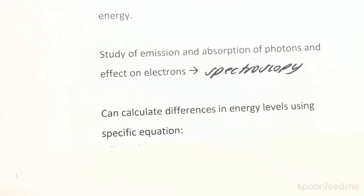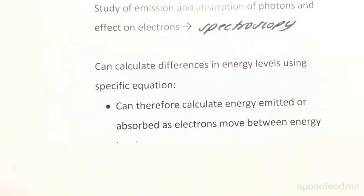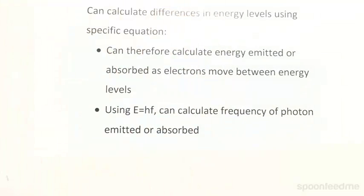We can actually calculate the energy levels for one electron atoms by using a particular formula. By calculating the values of specific energy levels, we can look at the differences in the energies between two levels, and therefore we can calculate the amount of energy that's released or absorbed when electrons move between these energy levels. We can actually then use the equation we looked at previously where energy is equal to Planck's constant times frequency, and we can calculate the frequency of the photon that's therefore emitted or absorbed. This is a really powerful tool and we'll get into using these equations in a later video.